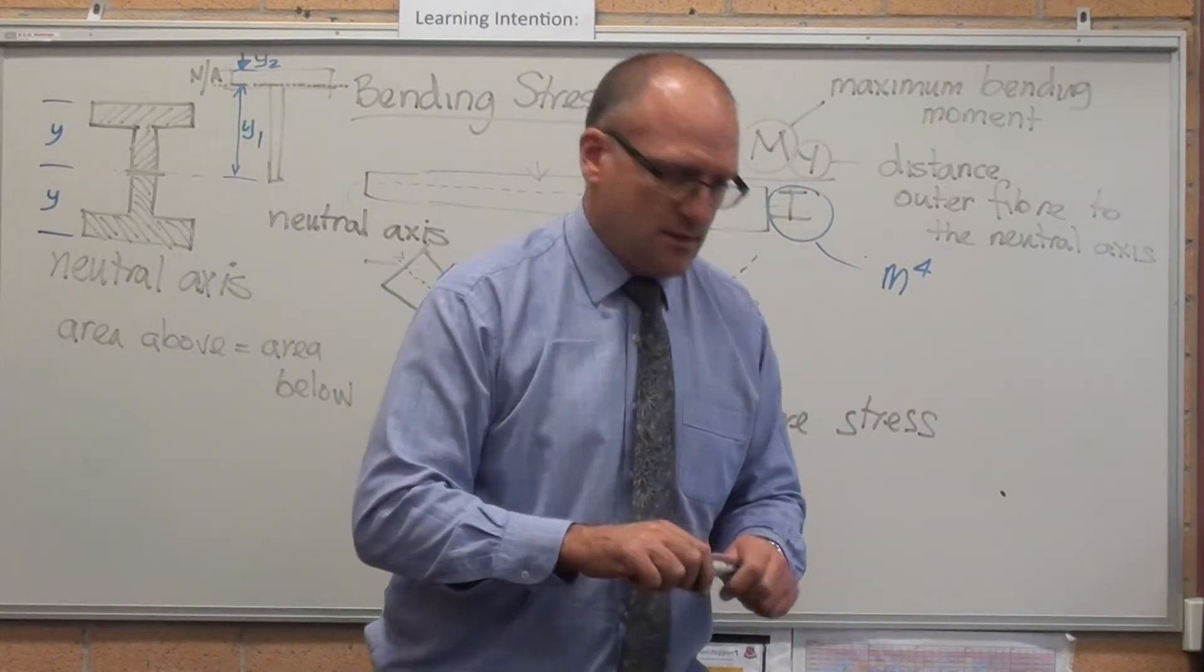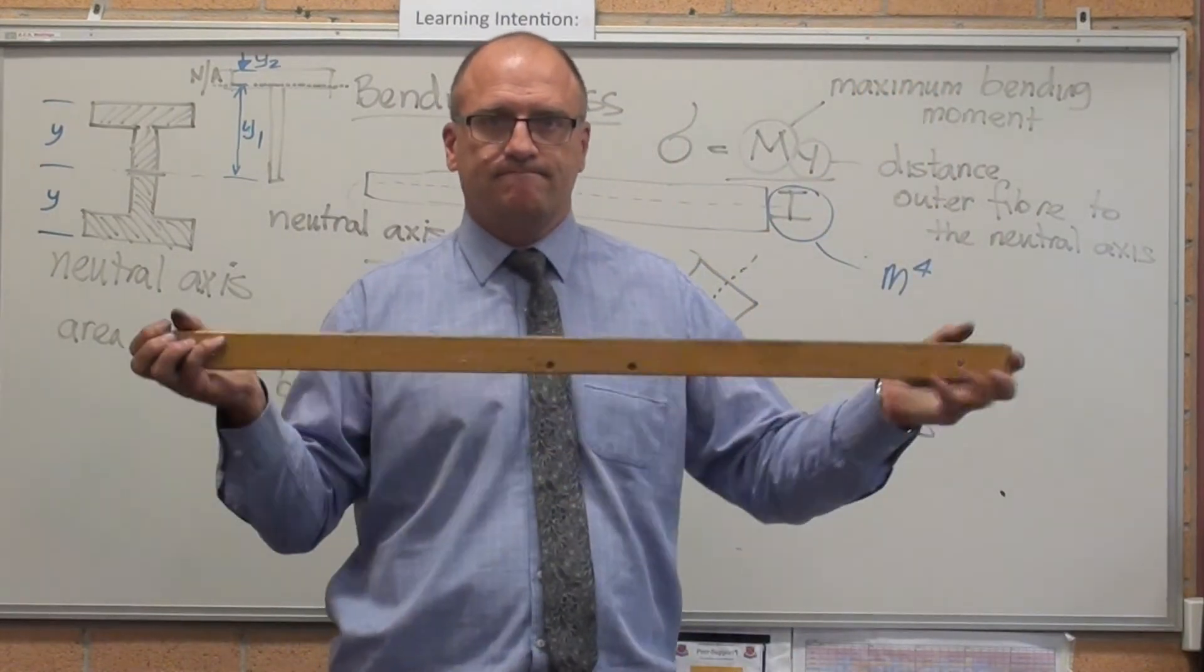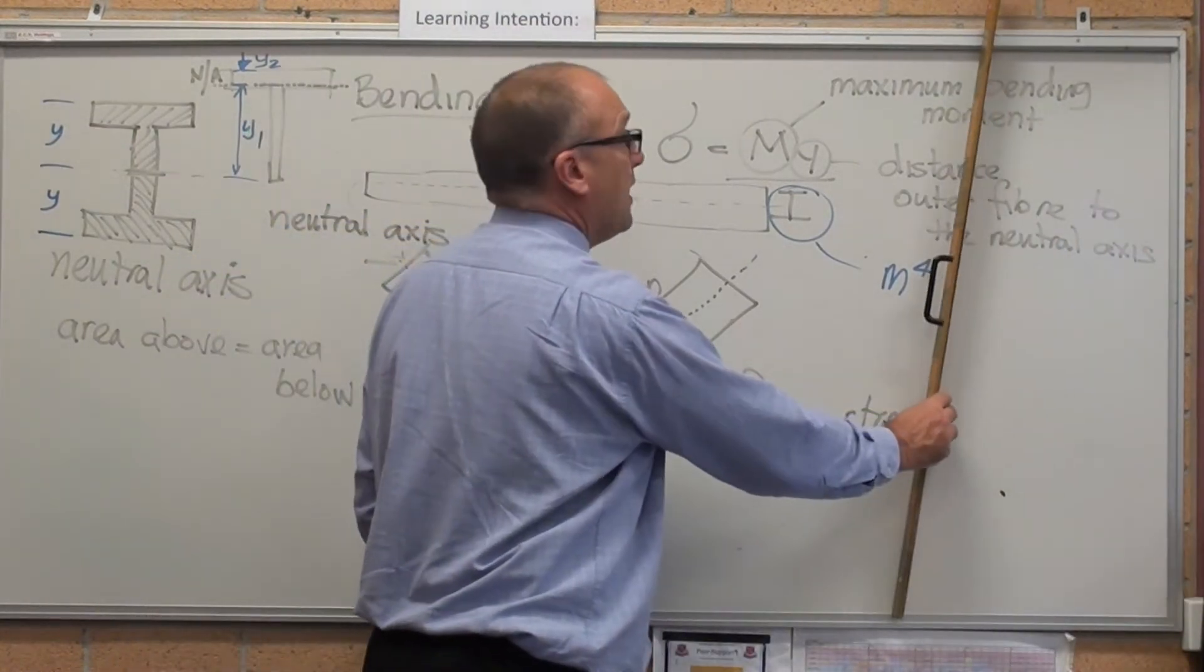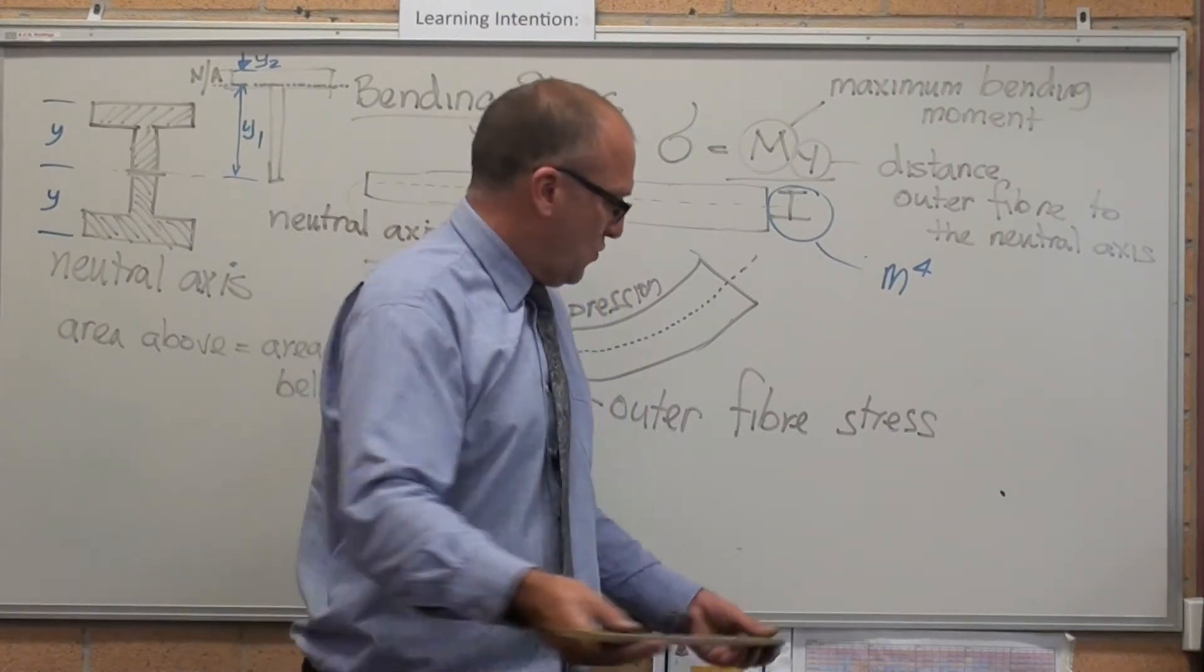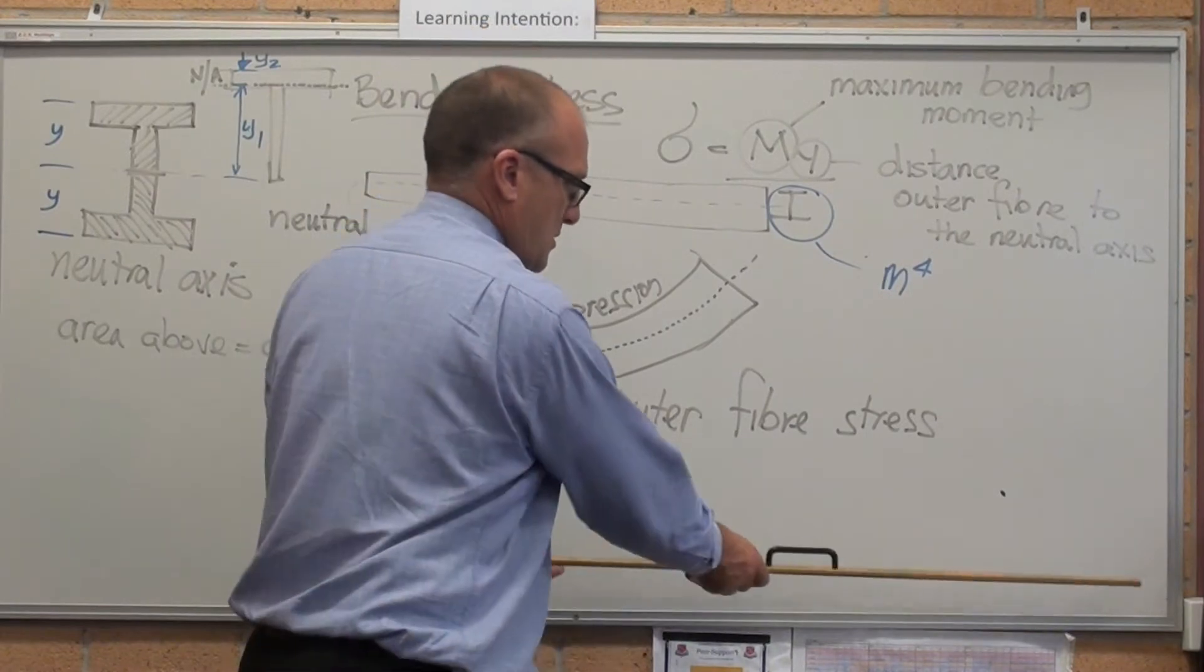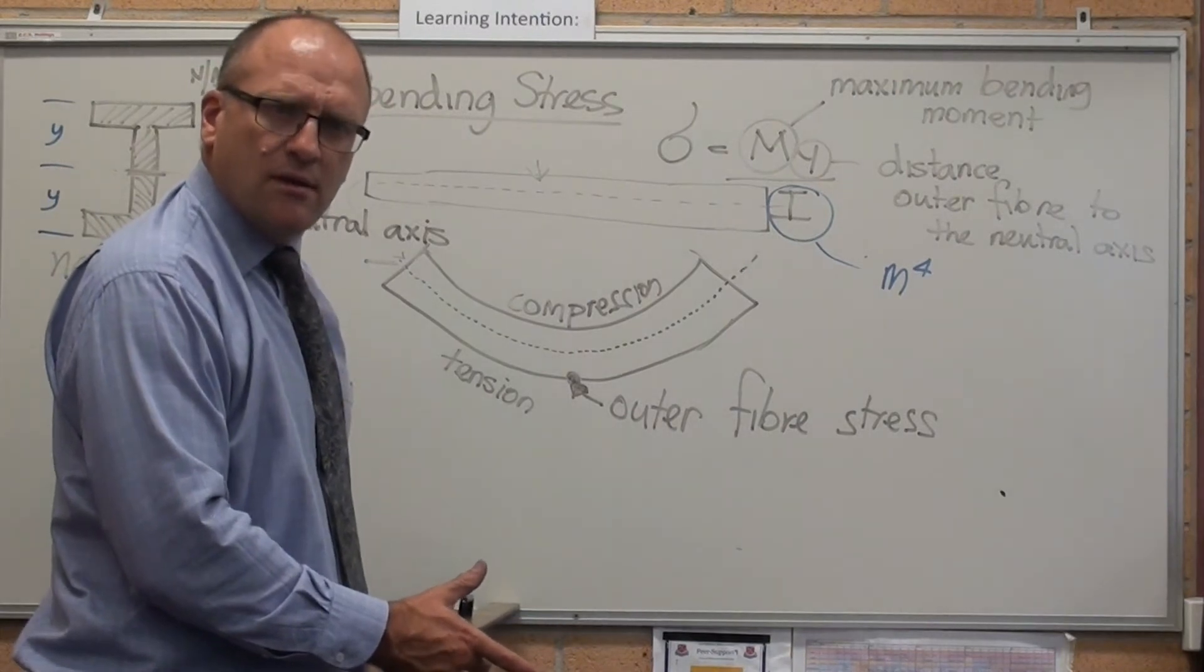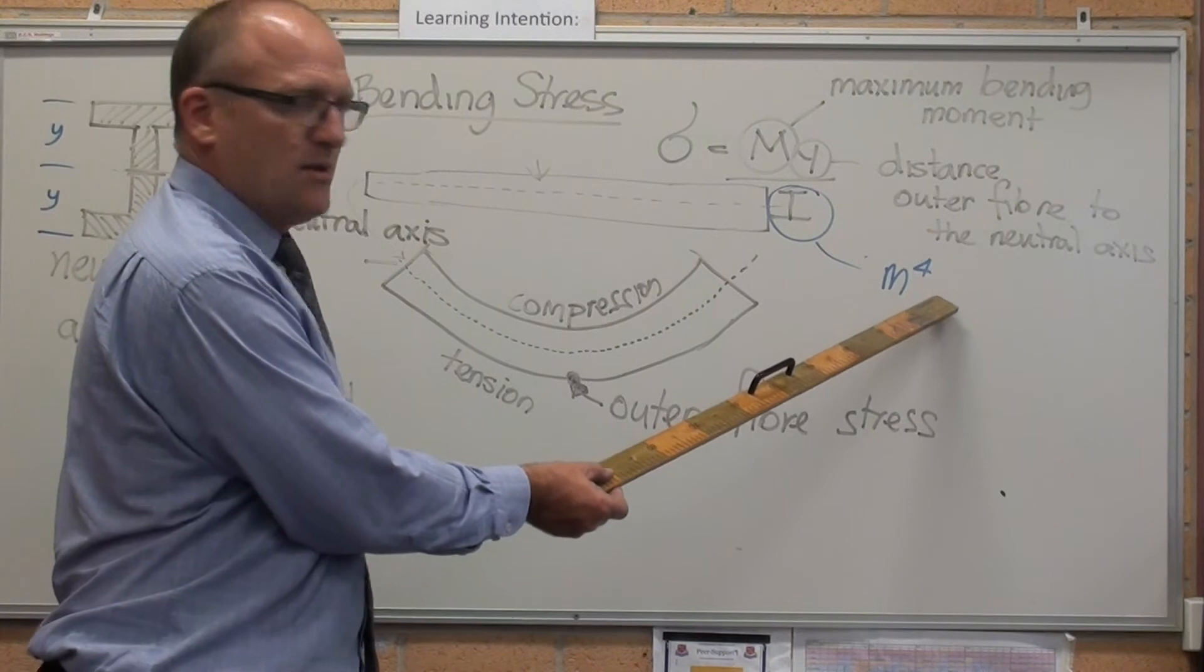We know what a metre is. That's one metre. One metre squared, that times that, one metre squared, that's easy. One metre cubed, that's volume. That far out, times that, times up there, that's one metre cubed. Now let's get your head around a metre to the fourth.